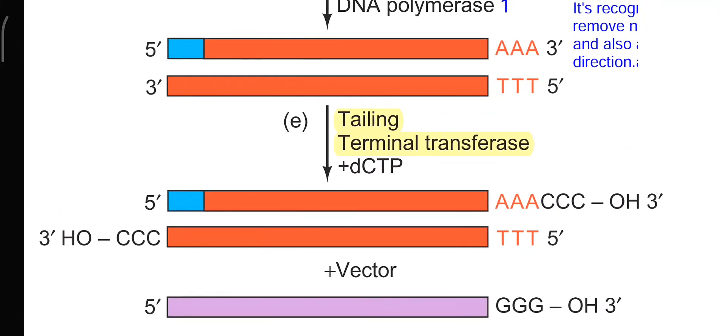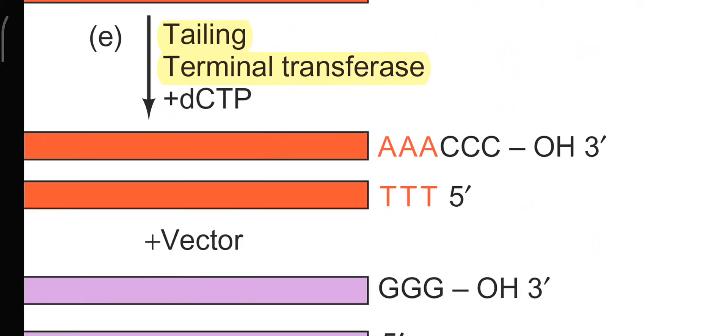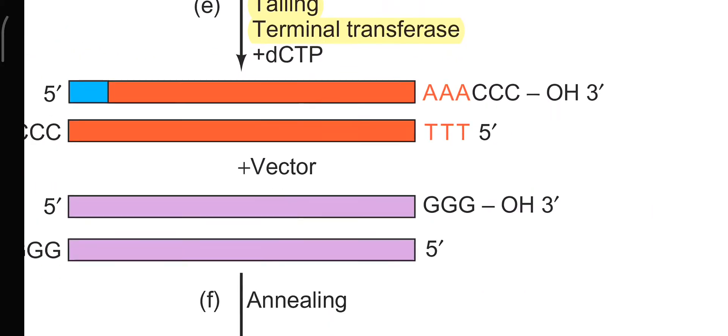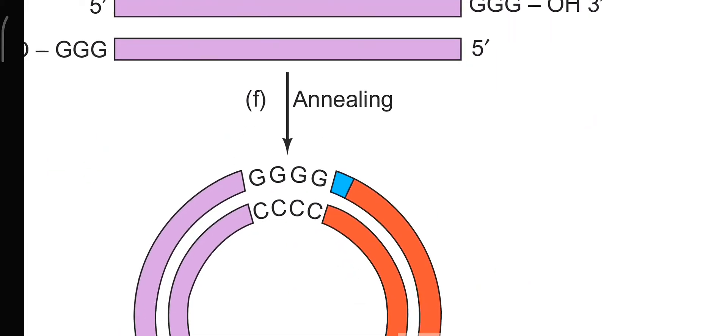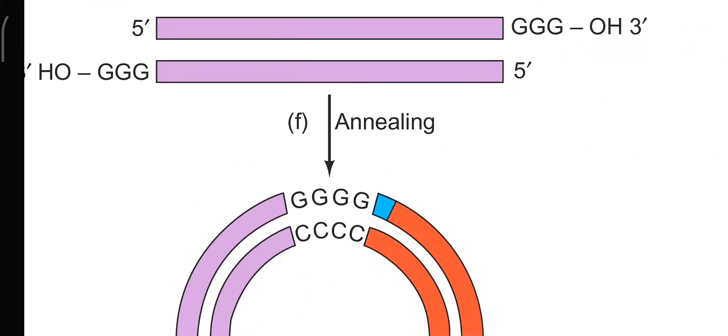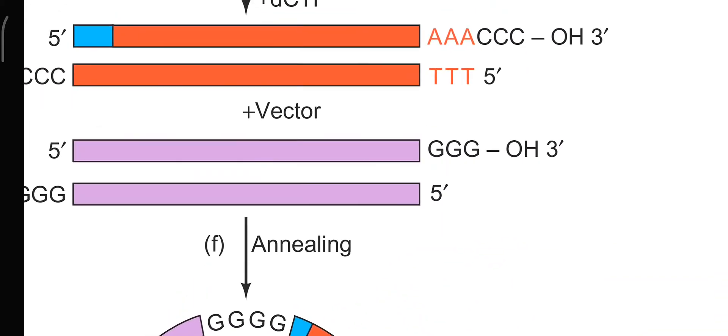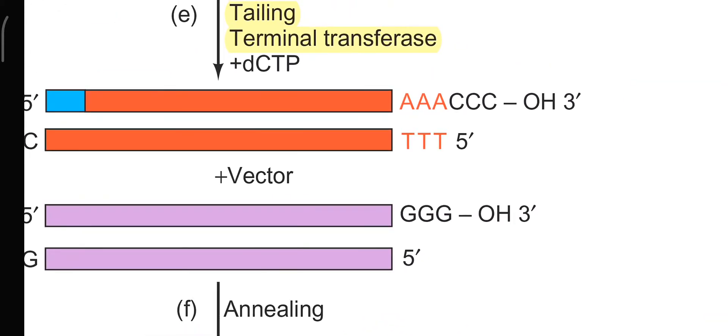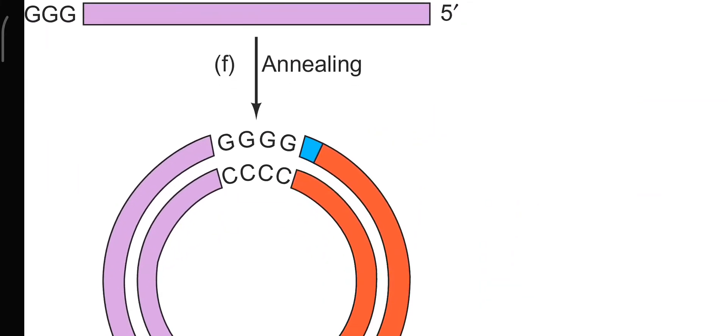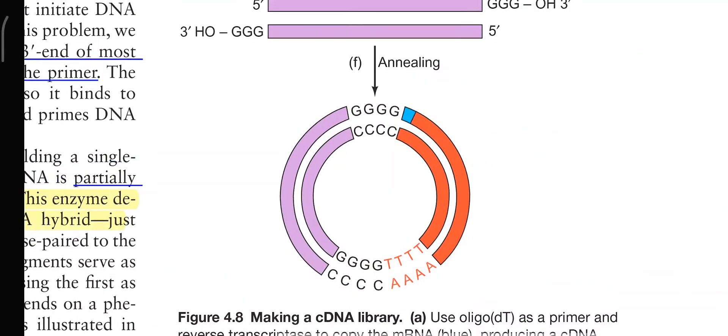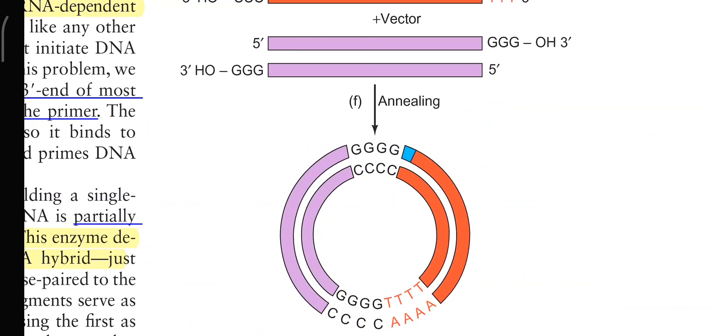This enzyme helps to add this poly-C tail at the 3' end. And we have the vector having complementary poly-G strand, which will base pair with that of your poly-C to join this that will be used for cloning purpose to multiply our target gene. Thank you.